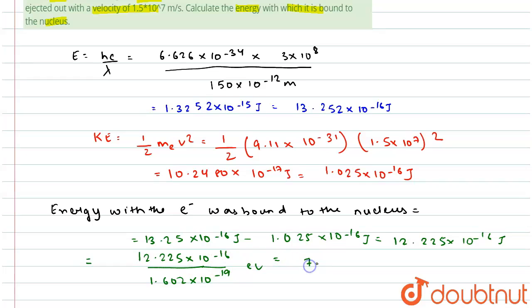This equals 7.63 into 10 power 3 electron volts. So this is the energy with which it is bound to the nucleus. Hope this is clear to you. Thank you.